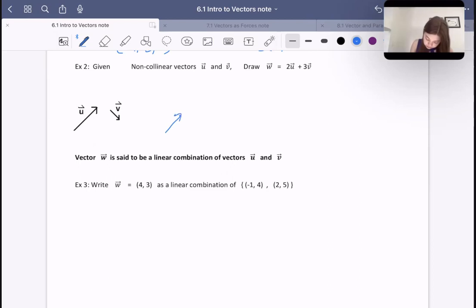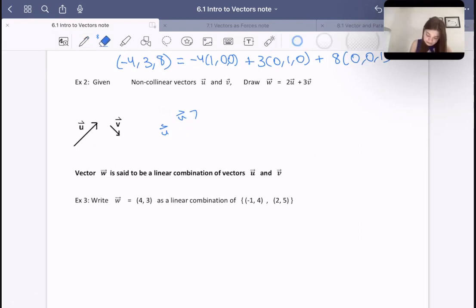So there's 2u overall, right? So this is overall going to be 2u. And then v is this one, so 3v, 1, 2, 3v's, 3v. And so the resulting vector, the resultant, is w, right? Is vector w.